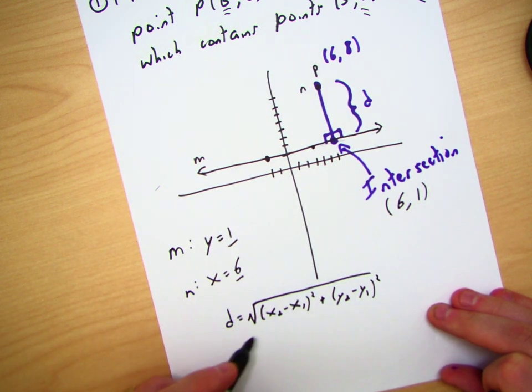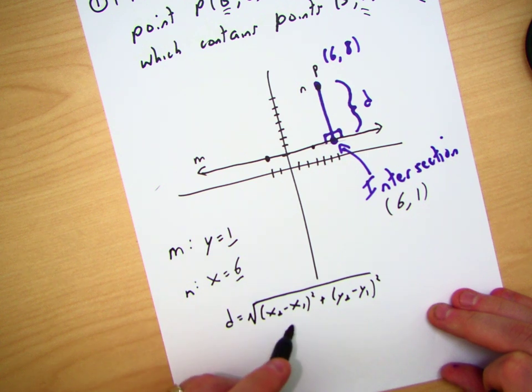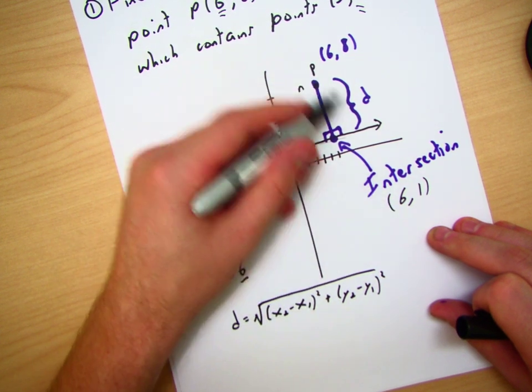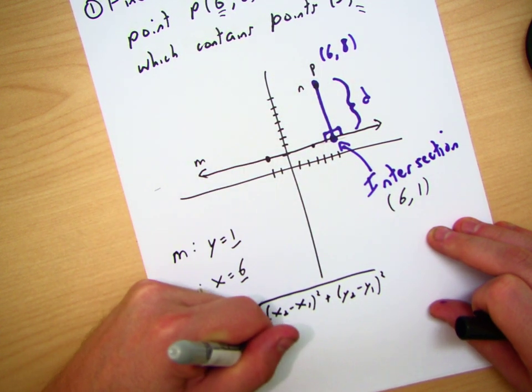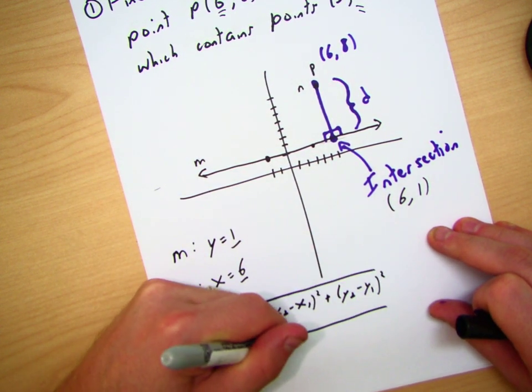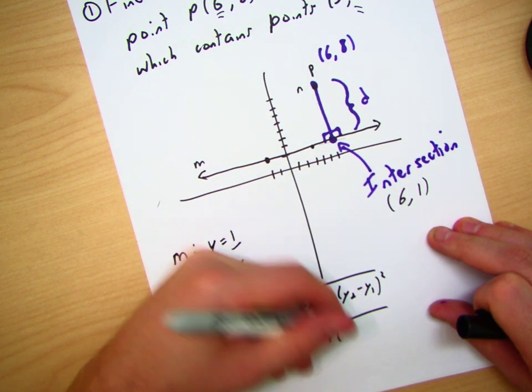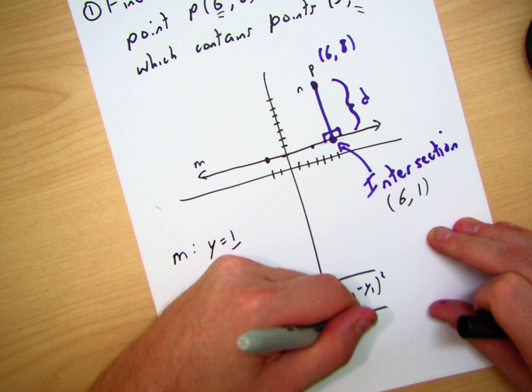When I do this now, you're going to get here, if I plug in my numbers, I have the point (6, 8). Okay, so the difference in the X's will actually give me, if I put my numbers, you're going to get (6 - 6), (6 - 6)² plus, then I'm going to get (8 - 1)².